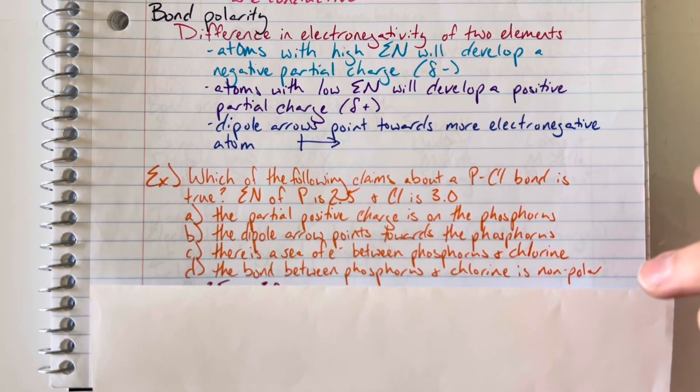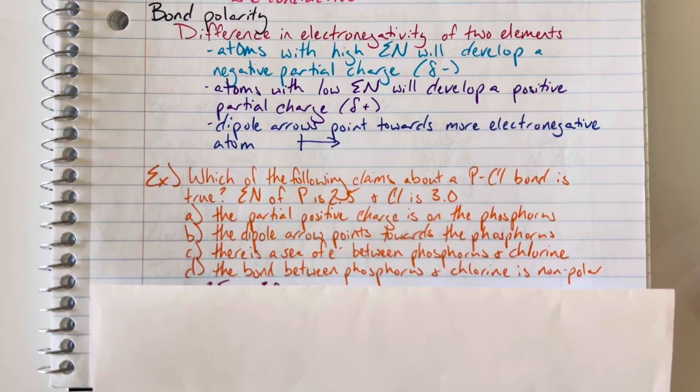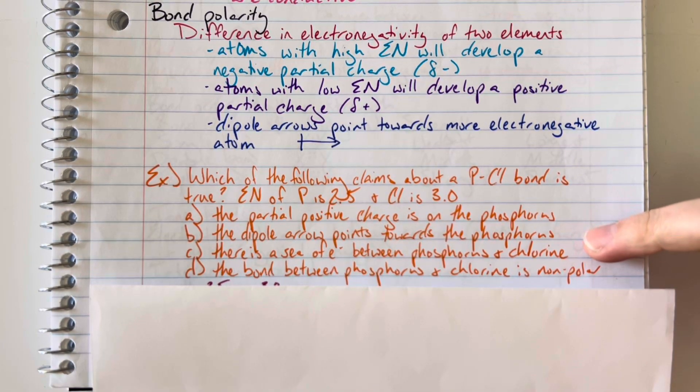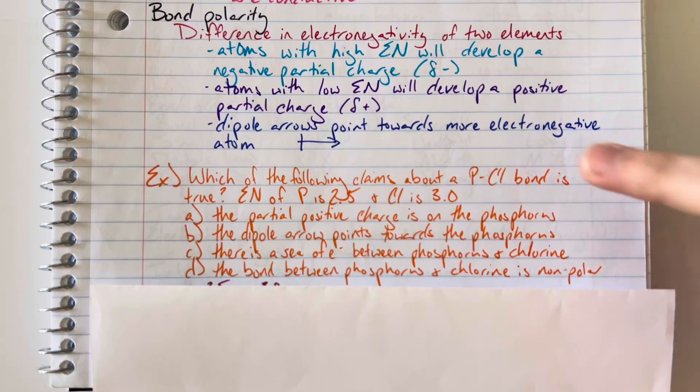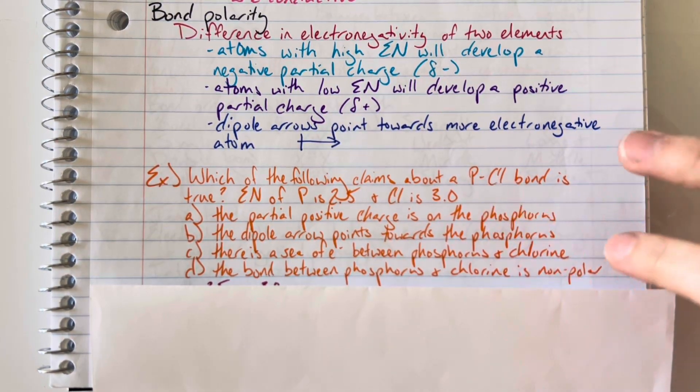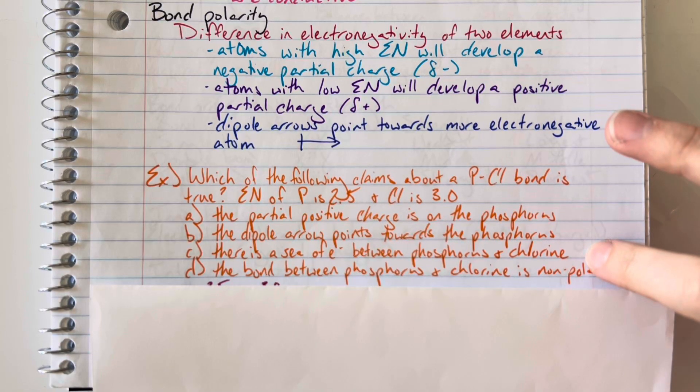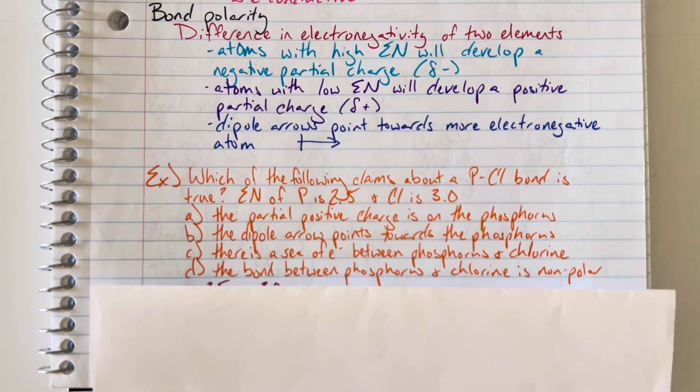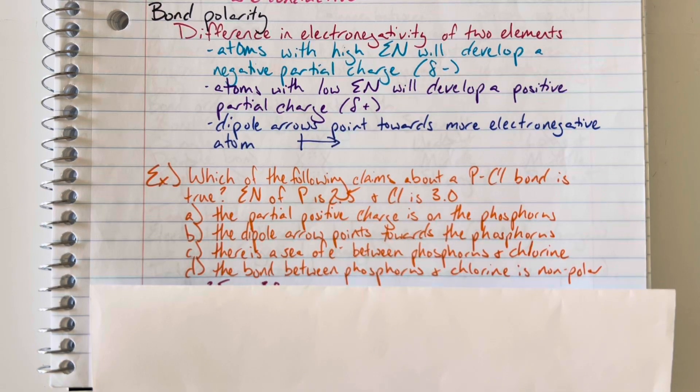Looking at my answer choices, I see the partial positive charge is on phosphorus - that sounds good. The dipole arrow points toward phosphorus - this is not correct. My dipole arrow would point toward the more electronegative element, which would be chlorine in this case. There's a sea of electrons between phosphorus and chlorine - the sea of electrons would only be present if this was a metallic bond. Phosphorus and chlorine are both non-metals, so that does not meet the criteria for a metallic bond. I would need only metals to be present. So no.